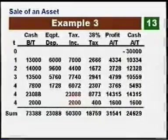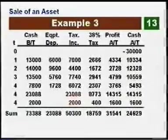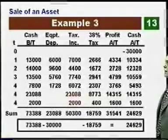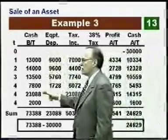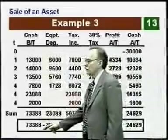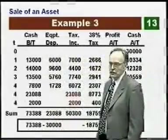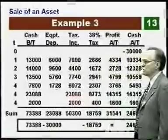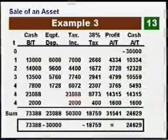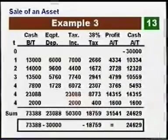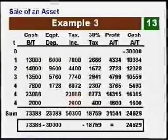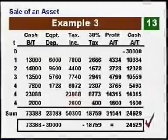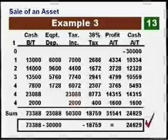The sums give us total cash flow and total profit after tax. We can perform a check: total cash before taxes is $73,388; we spent $30,000 on equipment and paid $18,788 in taxes. That equals our cash flow after taxes of $24,628, confirming our total cash flow after tax. There are different ways to perform this check — this is just one particular method.